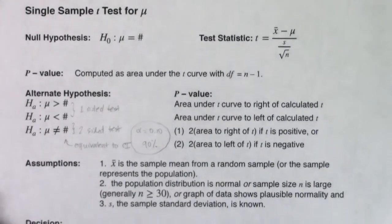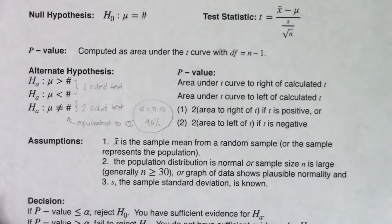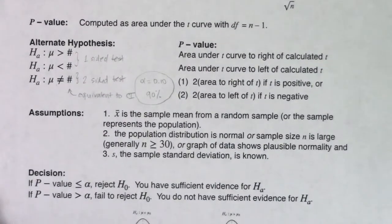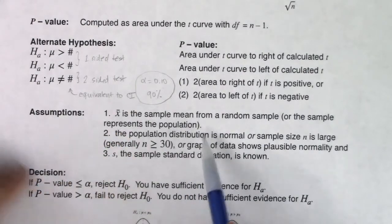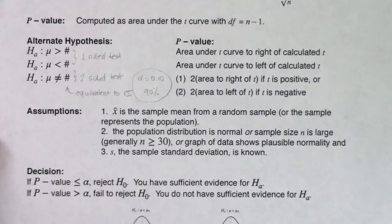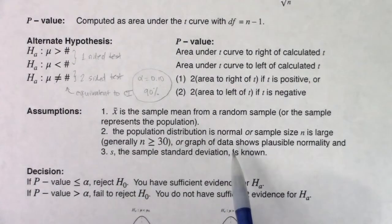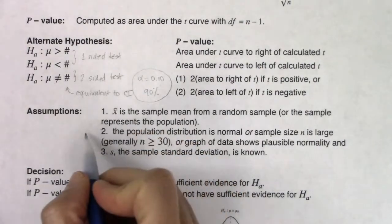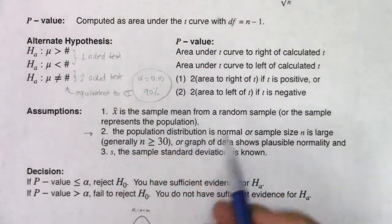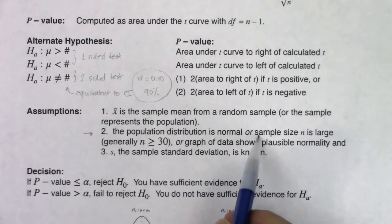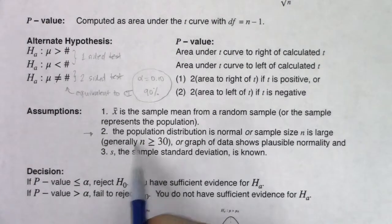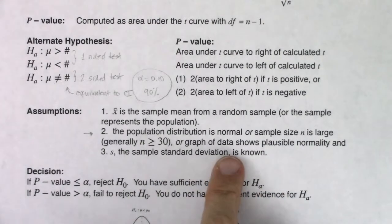In terms of assumptions, they're the same ones from chapter eight. We still want a random sample, or that our sample represents our population. We need normality — that is the deal-breaker assumption. Either the population distribution is stated to be normal, the sample size is large enough for the central limit theorem to kick in, or we make a graph of your data that shows plausible normality.